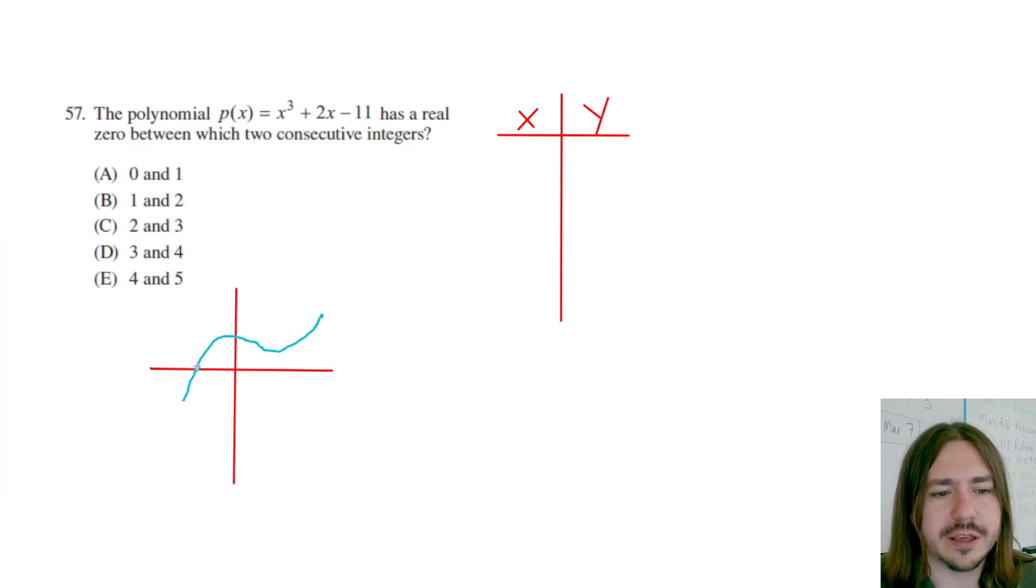This zero right here is the point we're looking for. Now, what's interesting about these zeros is we can find one if the sign changes from negative to positive or vice versa.